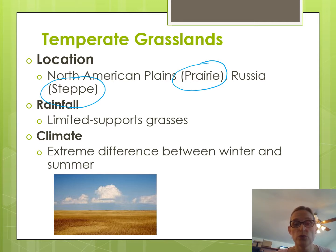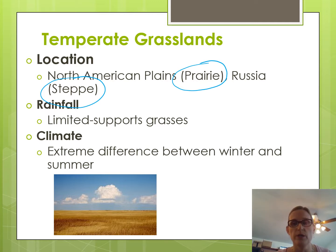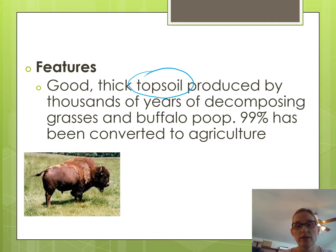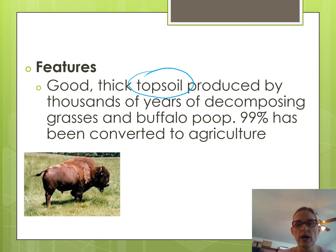The middle of the country gets huge winter storms and is very cold — Nebraska and the Dakotas are very cold in winter — and then in the summer it's the complete opposite: very hot and very humid. The most well-known feature of the temperate grassland is its topsoil. Decomposing grasses and buffalo waste make great topsoil. Some of the most fertile soil in the world is here, and because of that, most has been converted to agriculture, making it an endangered biome.